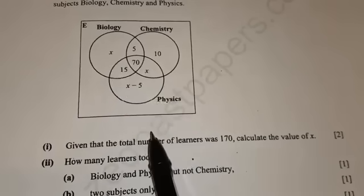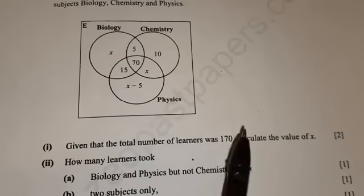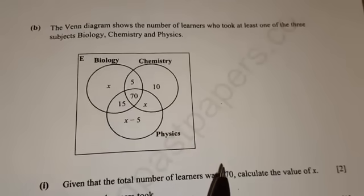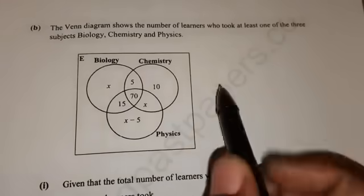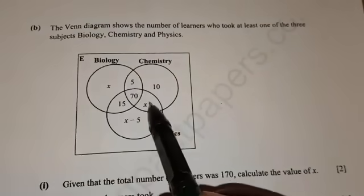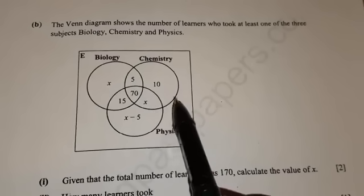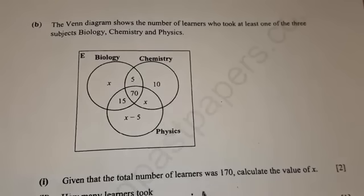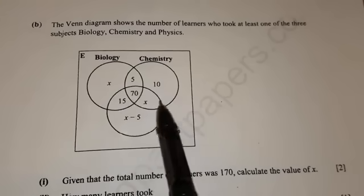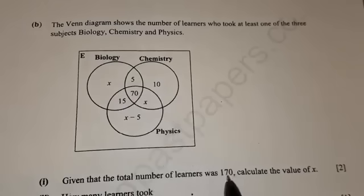For us to find the value of x, we are going to form an equation. So we will add all the elements because they are saying that the total number of students or learners was 170.